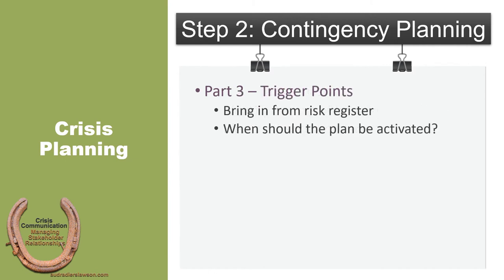In part three, we identify trigger points. Based on the intelligence developed as part of the issues management process, the most likely triggers for each of the types of crisis should be identified and briefly explained. The trigger points should indicate when the contingency plan for each crisis type should be activated.